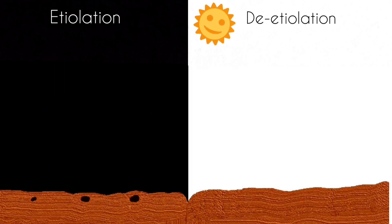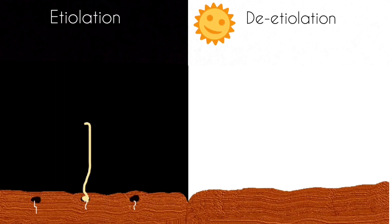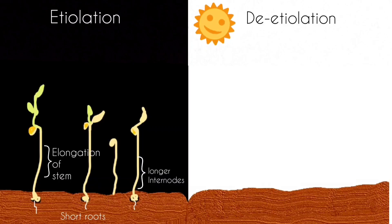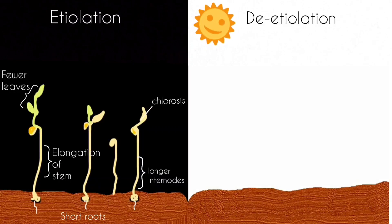Once we sow the seeds under dark conditions, the seed starts germinating and there will be development of short roots, elongation of stems, weakening of stems and leaves, longer internodes and hence fewer leaves, chlorosis — a pale yellowish-white coloration — and an apical hook with unexpanded leaves.